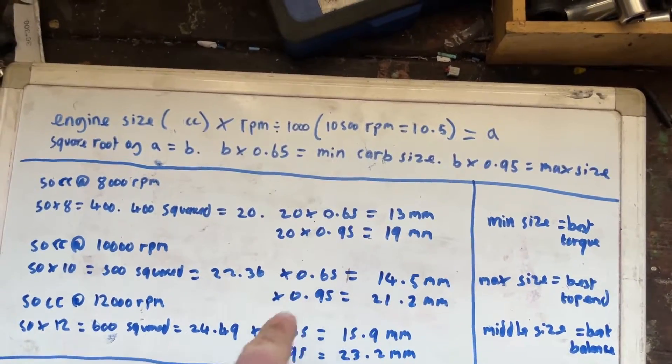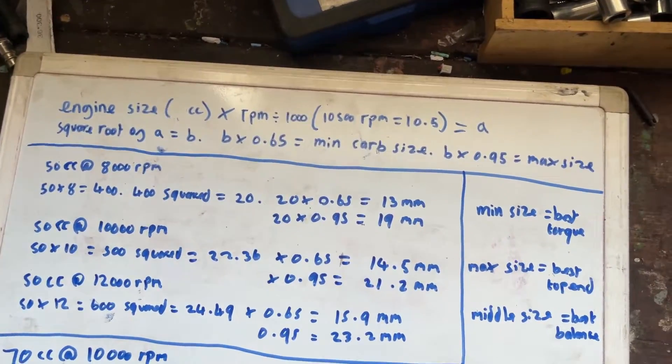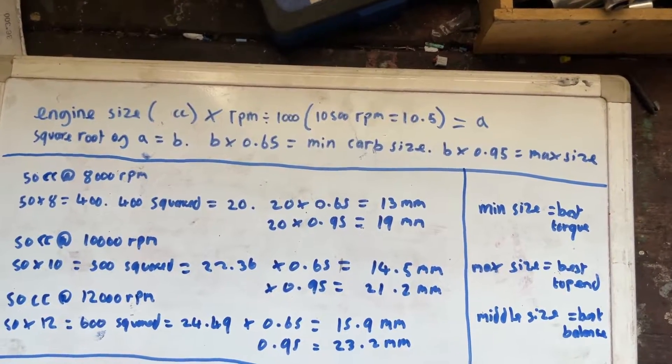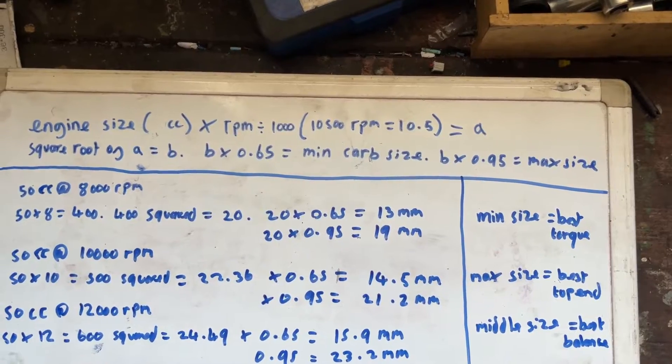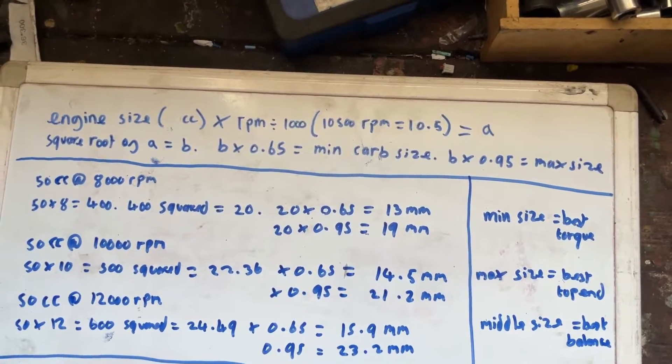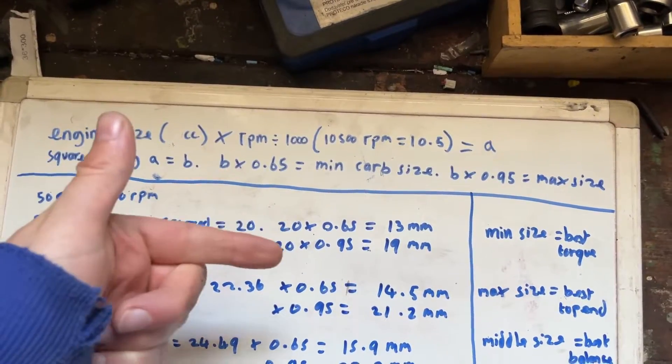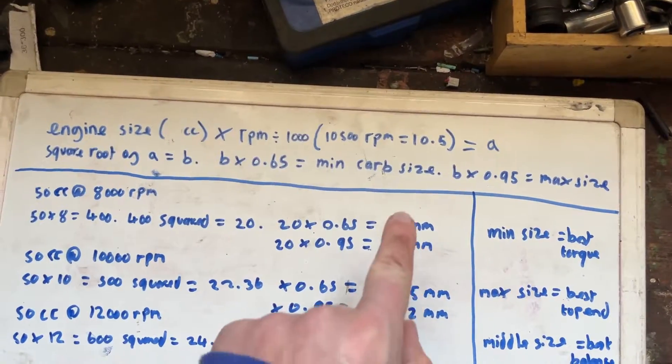Now this actually makes sense because, for example, I've got a 50cc behind me here which stock had a 16 millimeter carburetor and quite a few of them have, for example, 17.5s, things like that. Some of them have 12s but that is, in that instance, the 12 millimeter is actually too small, it's actually a restriction.